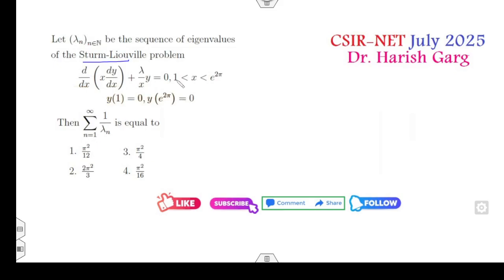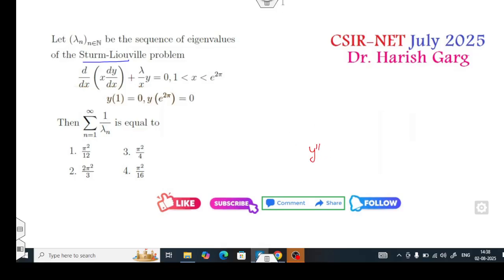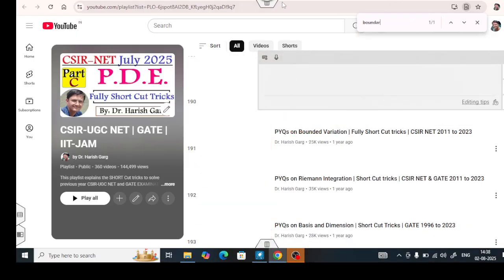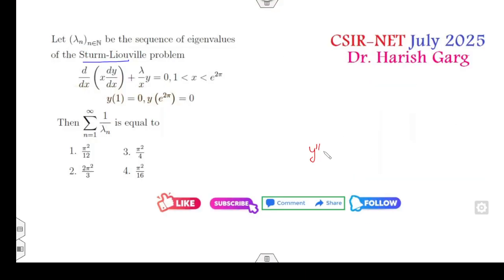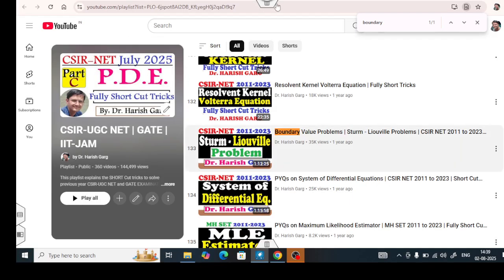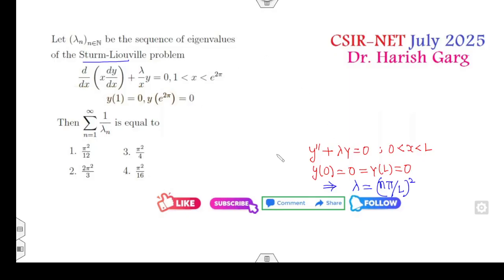Look at the second question. This is the Sturm-Liouville problem. It's very simple. Always remember the shortcut trick I have explained in my Sturm-Liouville problem lecture. If you look about this lecture on boundary value Sturm-Liouville problems, as I told you whenever the differential equation is of this form, whenever 0 < x < L, such that Y(0) = 0 and Y(L) = 0, then you can write the value of lambda directly as (nπ/L)².